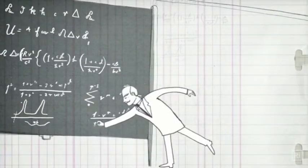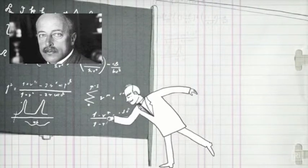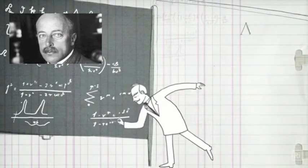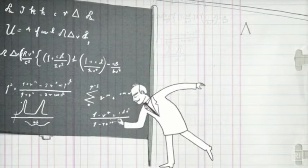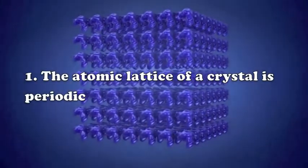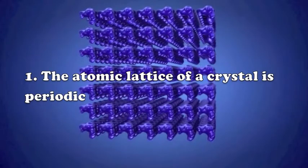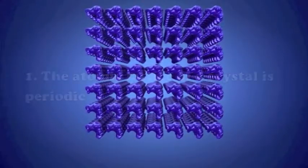In 1912, Max von Laue, a German physicist, first postulated that the crystalline structure could be used to diffract X-rays based on the following assumptions. First, the atomic lattice of a crystal is periodic, meaning the lattice pattern is repeated throughout the crystal.